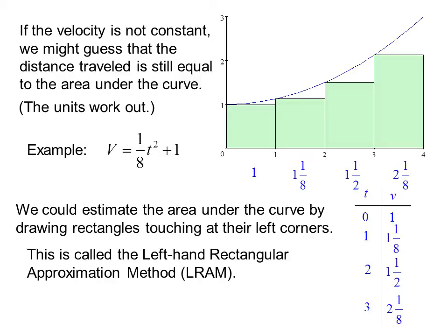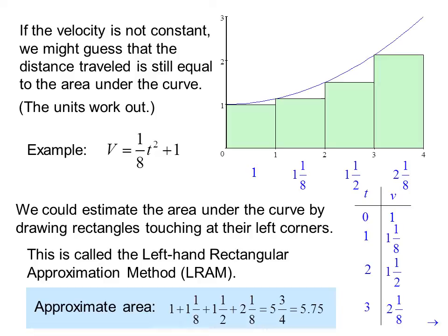So we can approximate the area by adding up the rectangles, and we get an approximate area of 1, plus 1 and 1/8, plus 1 and 1/2, plus 2 and 1/8, or 5 and 3/4, which as a decimal is 5.75. Now, just looking at the picture, it looks like our estimate is too low because we're missing these sort of triangular-shaped areas here, here, here, and here.